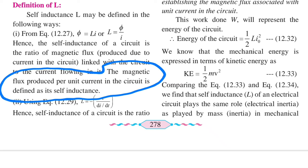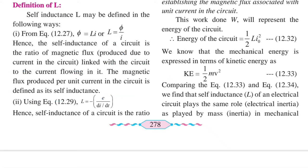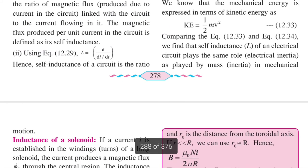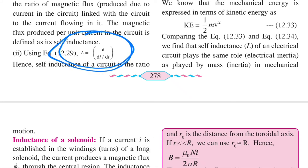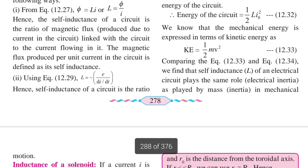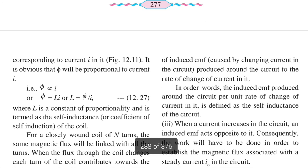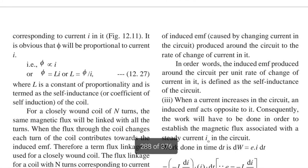Another way to state it: the magnetic flux produced per unit current in the circuit is defined as self inductance. Second definition, from L = e/(dI/dt): self inductance is the ratio of induced EMF caused by the changing current to the rate of change of current in the circuit.